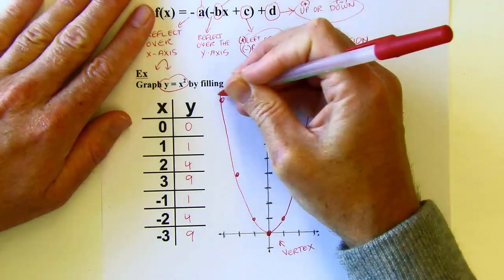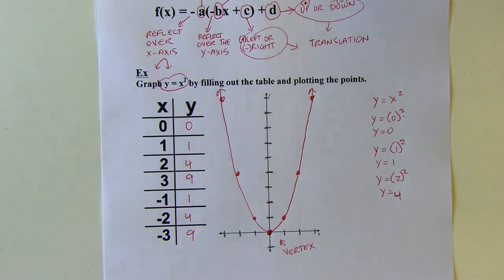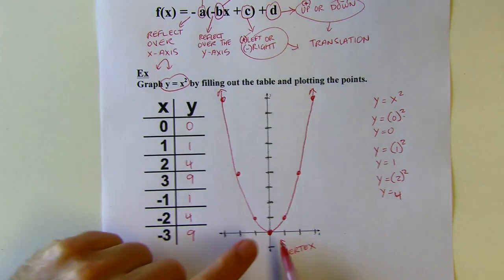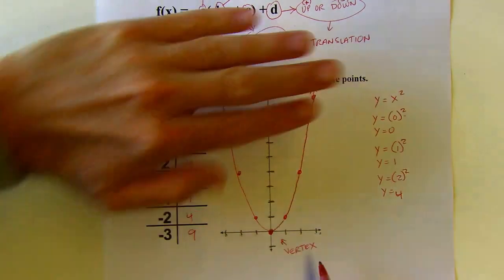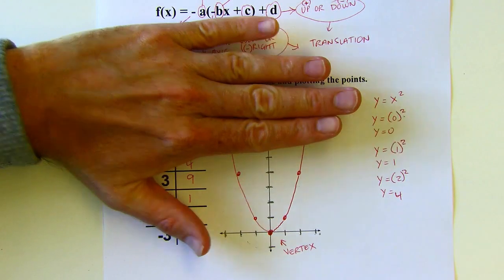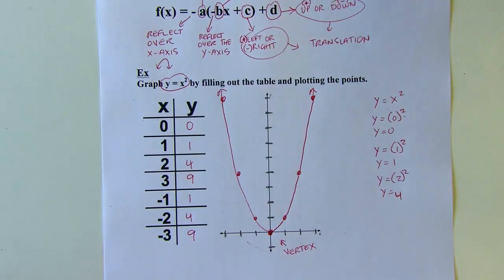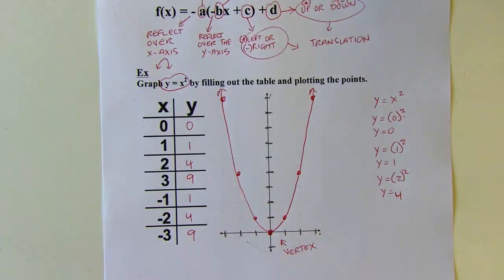It's going to look something like that. You could graph more points, but that's enough to get an idea. That's our parent graph, and you'll definitely want to have it memorized — at least what those first five critical points look like — because we're going to use that to do transformations on more complicated functions.